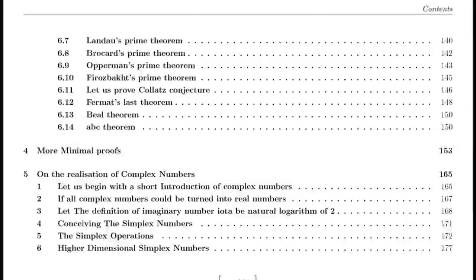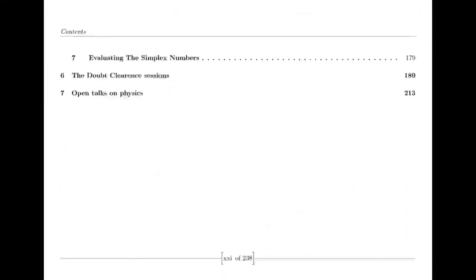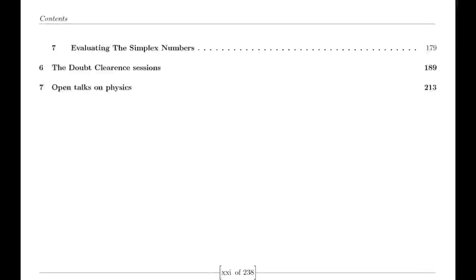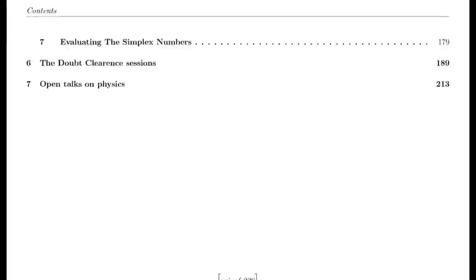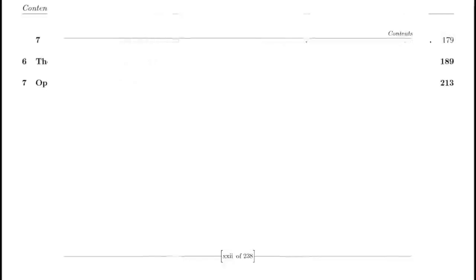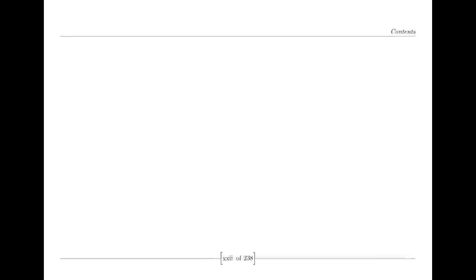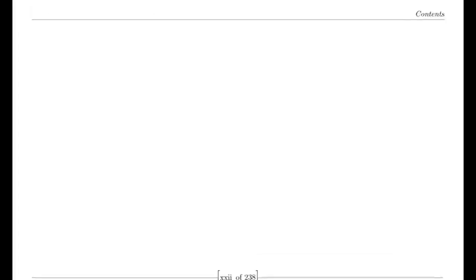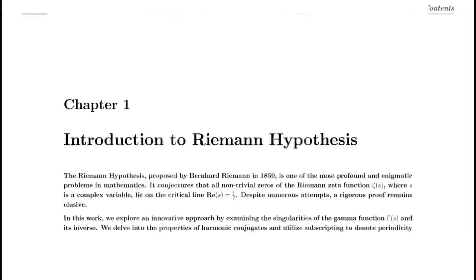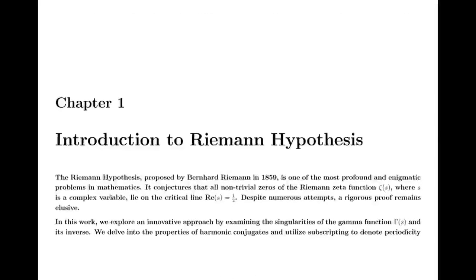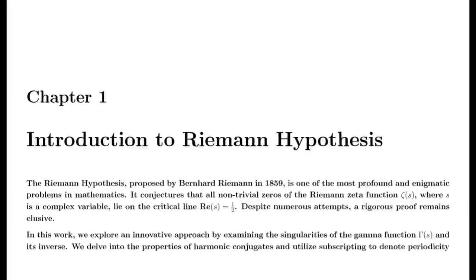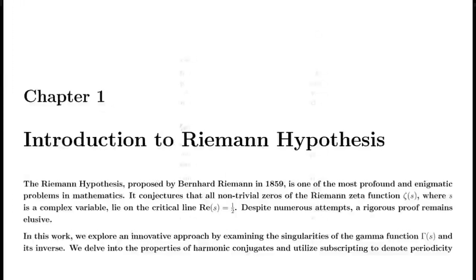One of Riemann's major discoveries was the reflection formula for the zeta function. This formula demonstrates a symmetry between the values of the zeta function at s and 1−s. Specifically, it shows that zeta(1−s) can be expressed in terms of zeta(s) using factors involving pi, the gamma function, and trigonometric functions. This reflection formula is fundamental to the theory of the zeta function and provides deep insights into its structure.